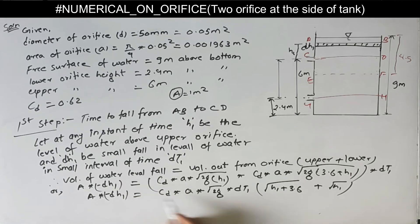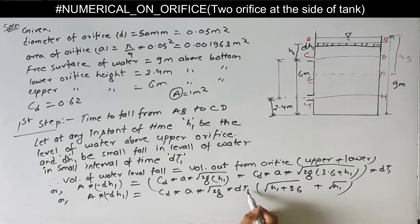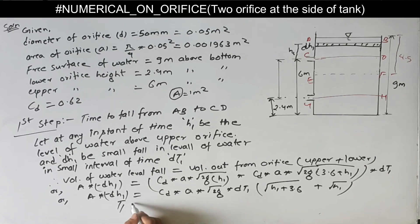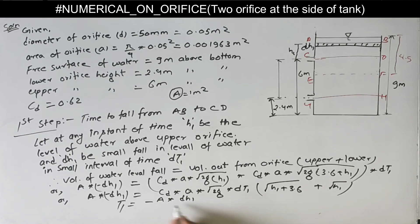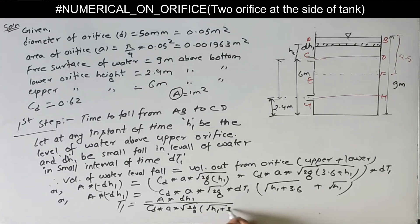We have remaining: root(H1 + 3.6) plus root(H1). And we have A into dH1 with a negative sign introduced. This negative sign indicates that with increase of time, the water level falls. So we separate dt1 and calculate total time T1 by integrating the equation. Total time T1 equals A into dH1 upon Cd into small a into root(2g), and we have root(H1 + 3.6) plus root(H1) in the denominator.